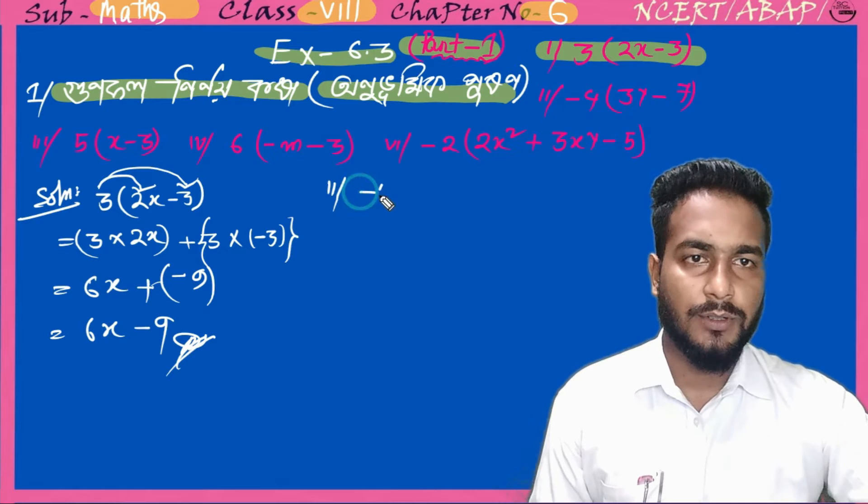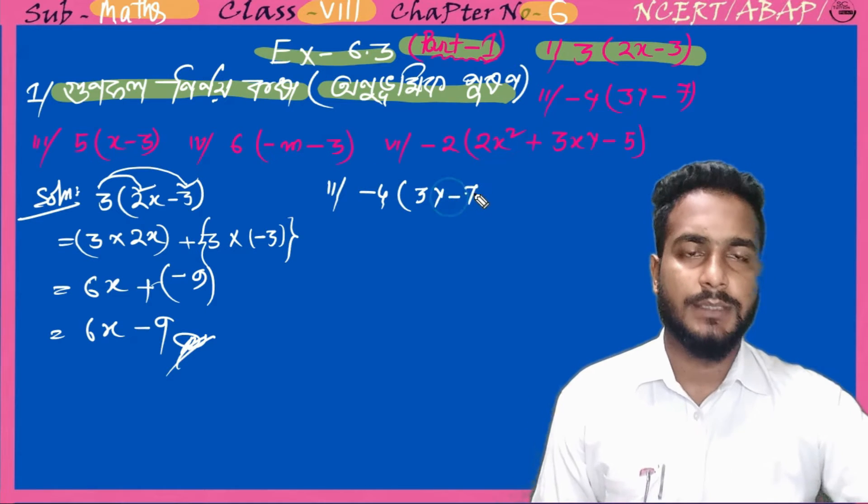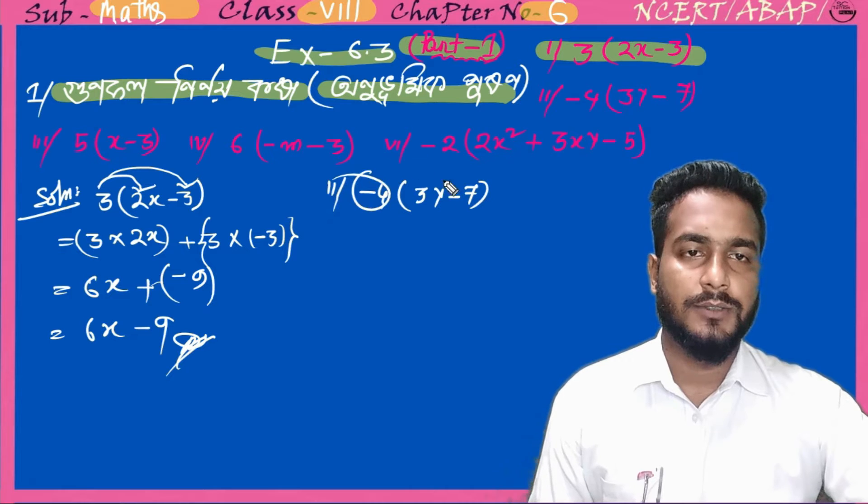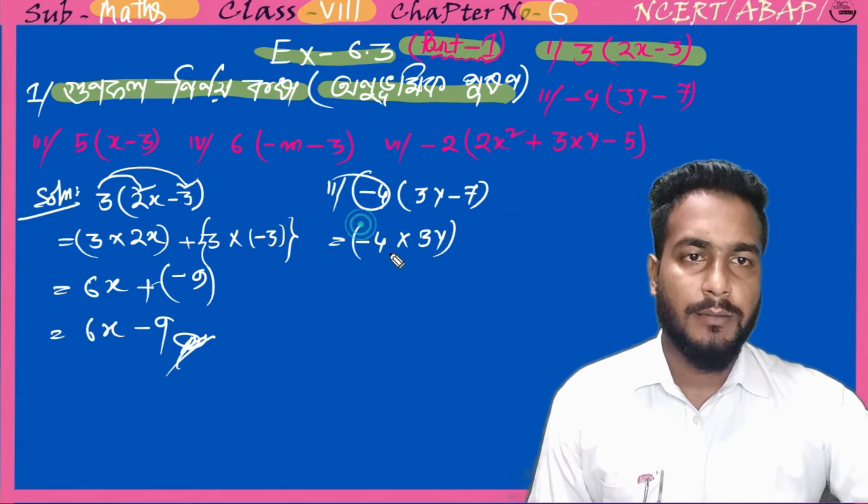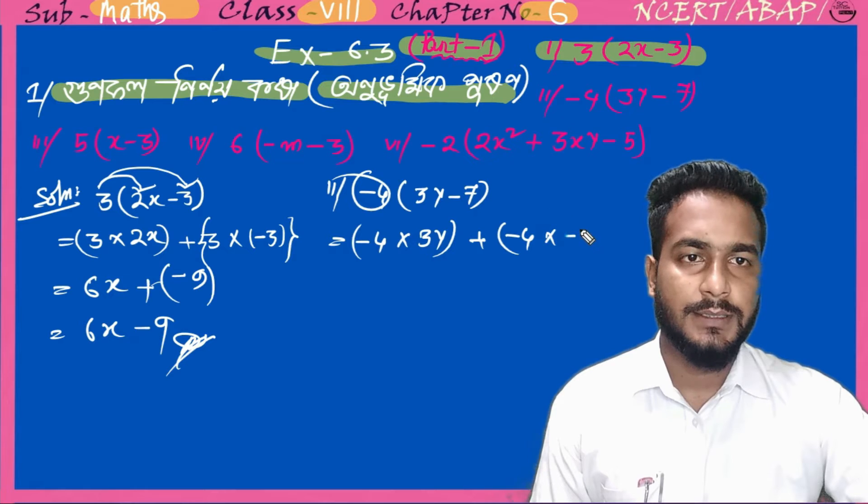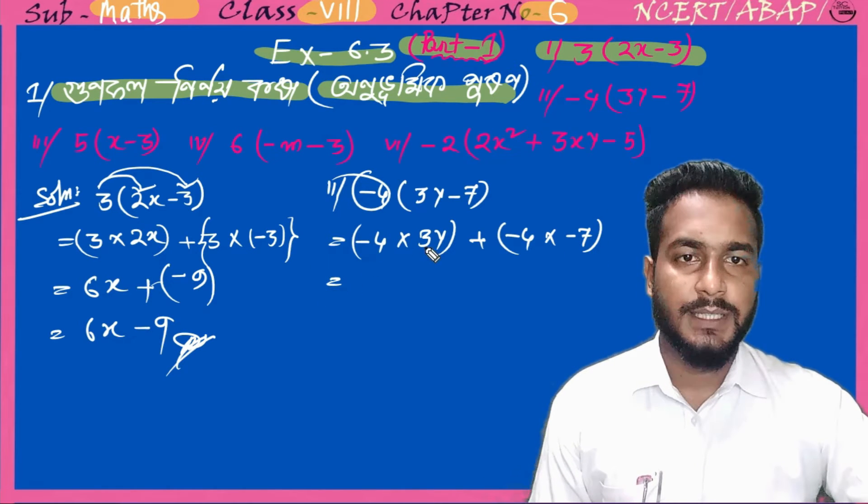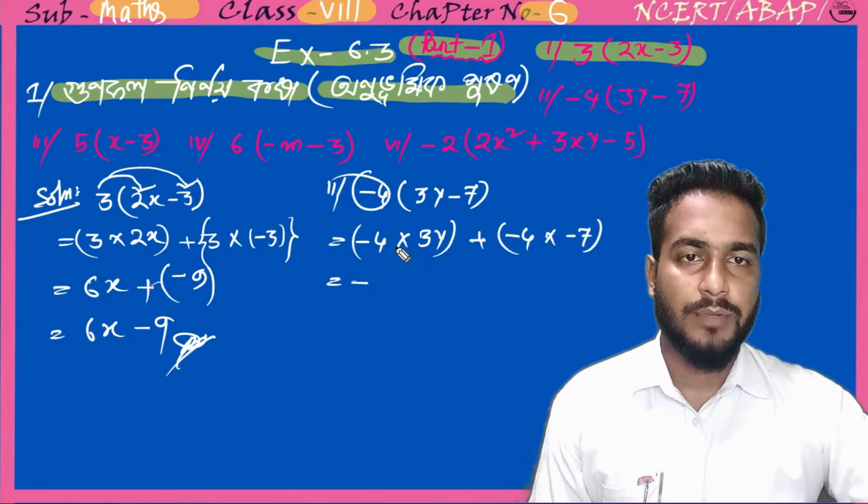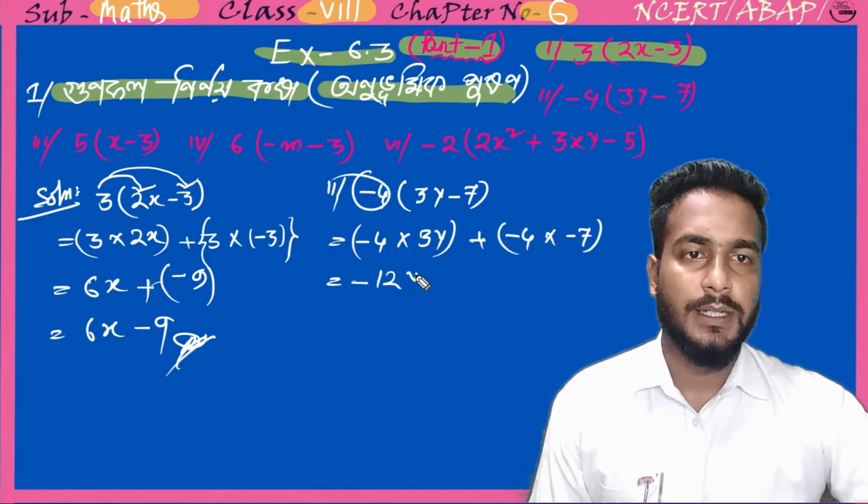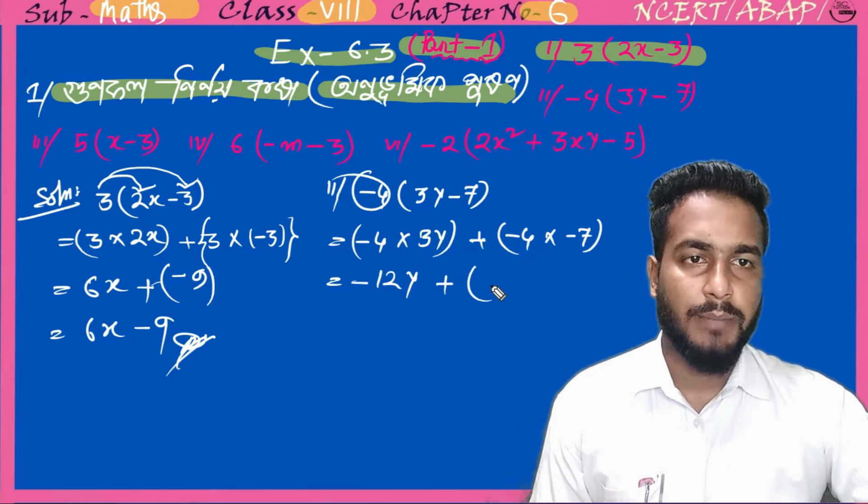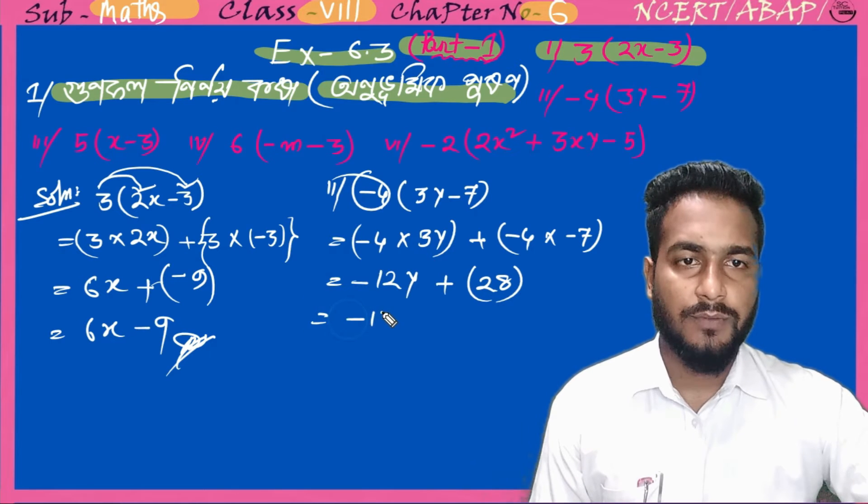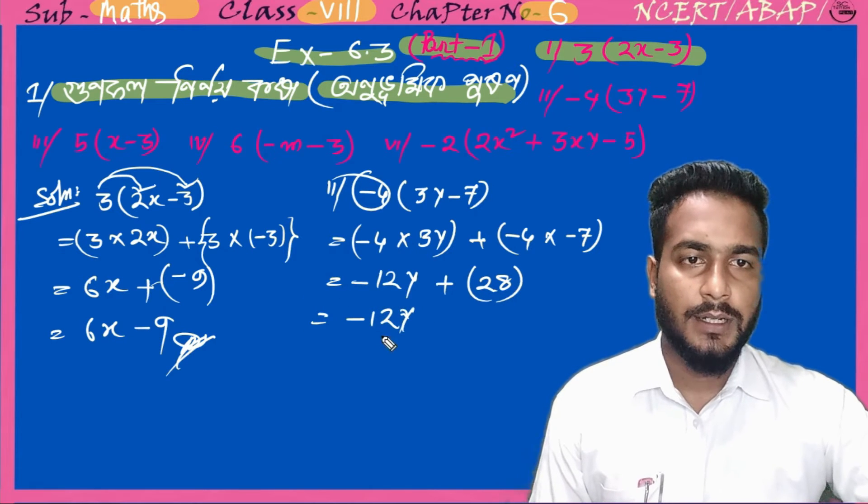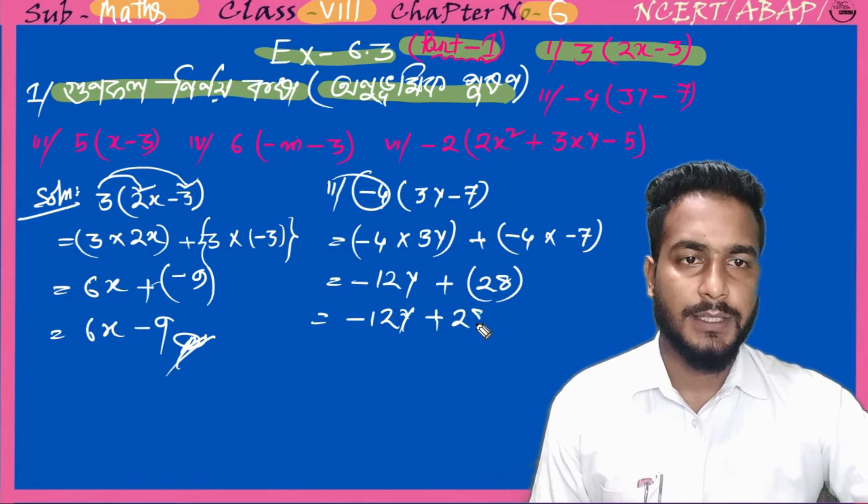Next we are going to do minus 4 times 3y minus 7. So minus 4 into 3y plus minus 4 into minus 7. Minus 4 into 3 equals minus 12y, plus minus into minus 4 into 7 equals plus 28. So it equals minus 12y plus 28. This is the answer.